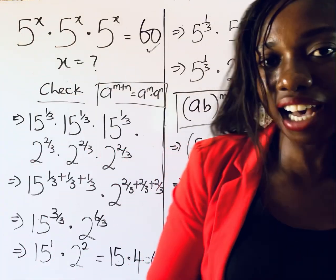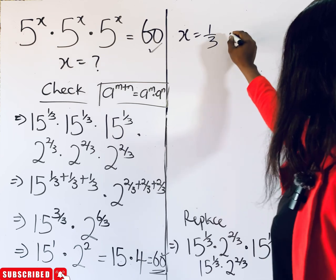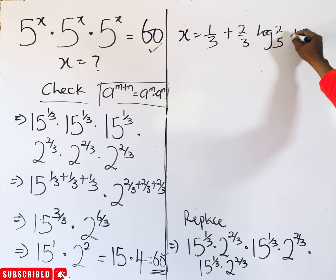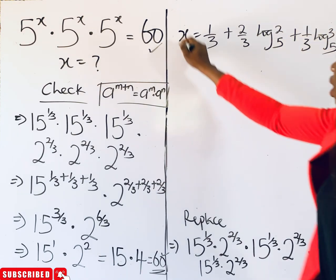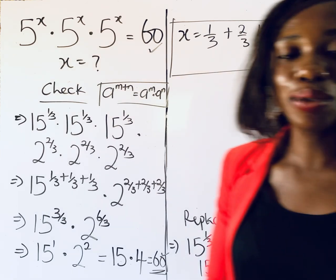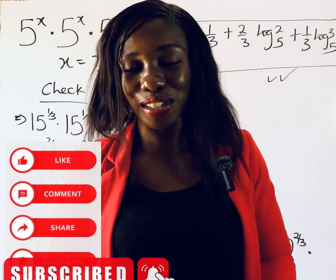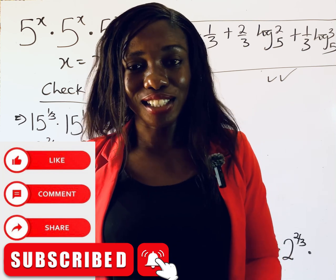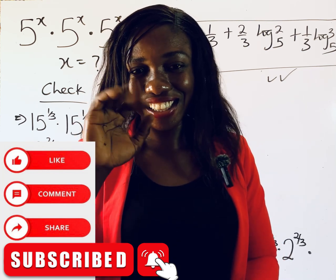In conclusion, x = 1/3 + (2/3)·log₅(2) + (1/3)·log₅(3) is absolutely correct. I hope you really learned a lot — let us know in the comments. Don't forget to share this so others can learn the skills we displayed. If this helped, give it a thumbs up, subscribe for more tips, and I'll see you in the next class. Bye-bye!